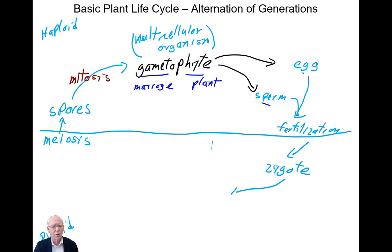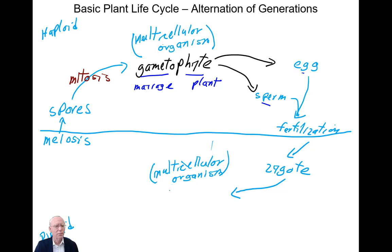Fertilization produces the zygote. The zygote undergoes mitosis to produce another multicellular organism, which is called the sporophyte. Again we have the suffix -phyte, meaning plant, and the word spore.